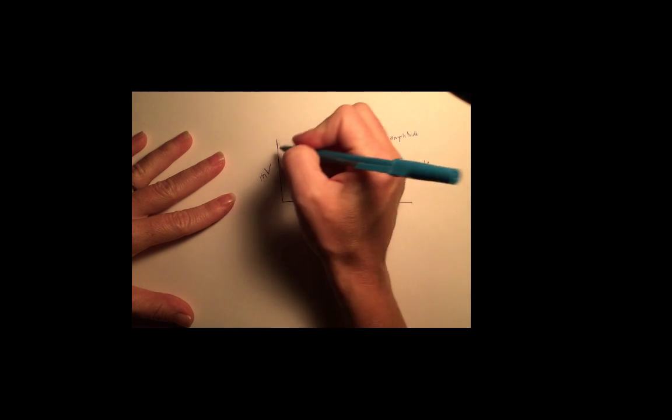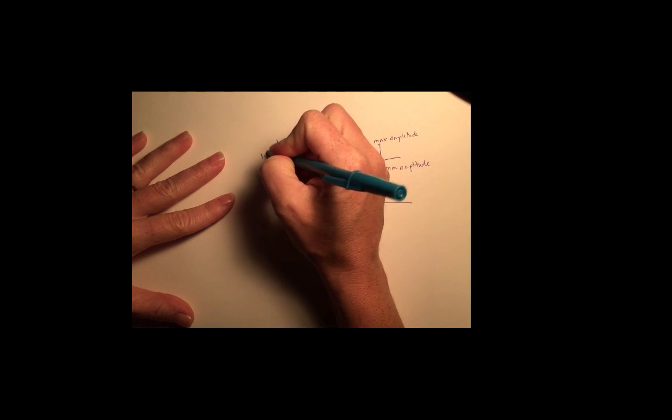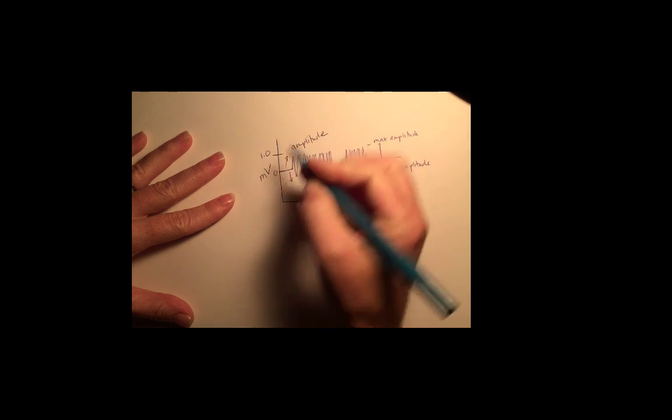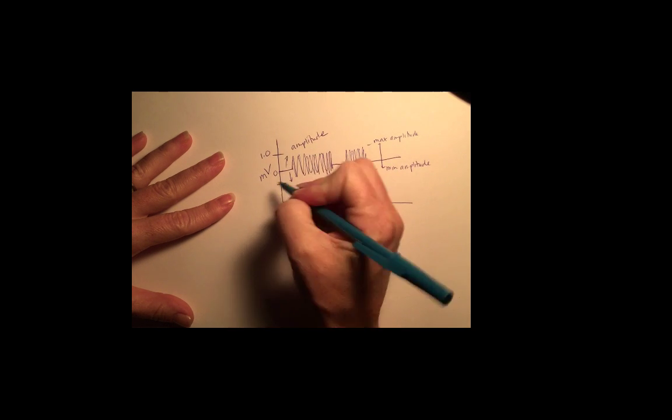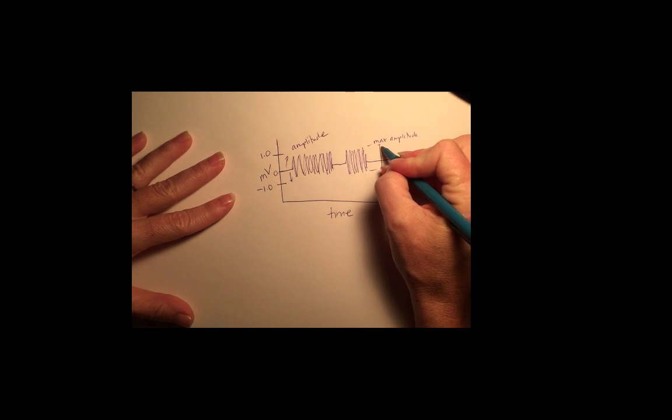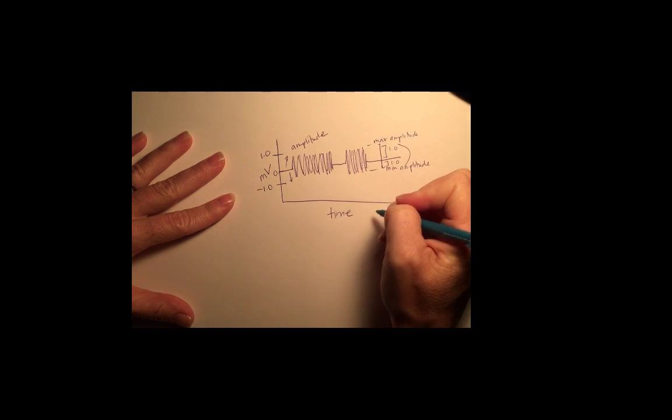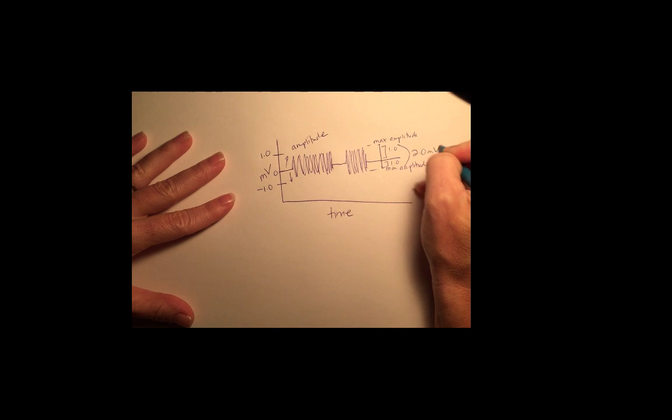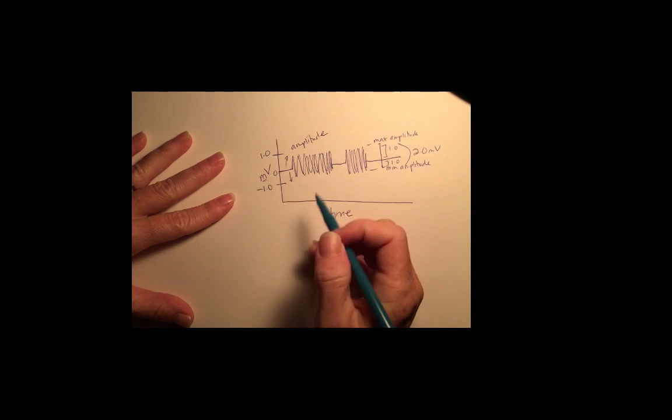So for example, if this was one millivolt, your baseline was at zero and your minimum amplitude was negative one, then you would have one up and one down. Your total peak-to-peak measurement would be two millivolts for the y-axis.